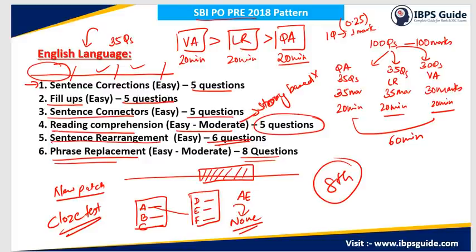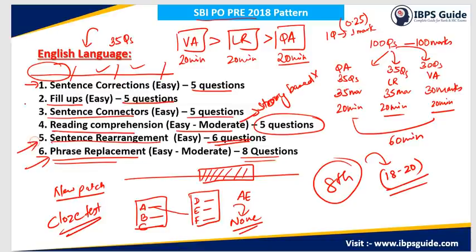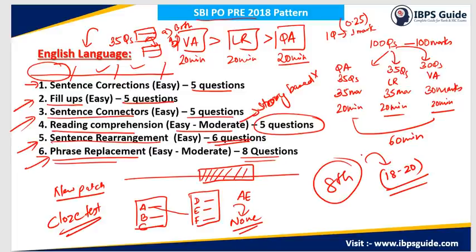Regarding safe attempts in English language — out of 30 questions, if you are able to score between 18 to 20 marks by doing 18 to 20 questions correctly, that will be your safe attempt in English. This is doable because questions related to phrase replacement, sentence arrangement, fillers, and sentence connectors were all easy. In connectors, two sentences are given and you have to combine them using the given options. If your comprehension is good, you can easily solve these types of questions. So 18 to 20 questions must be done — if you solve this many, you will always be on the safer side.